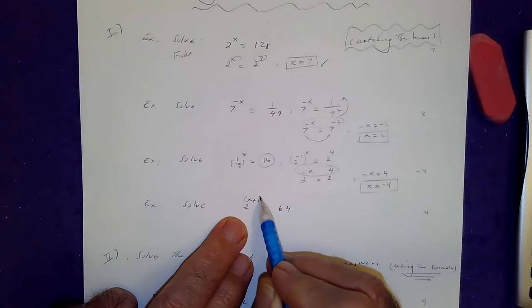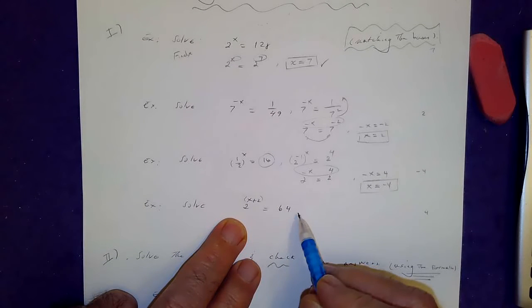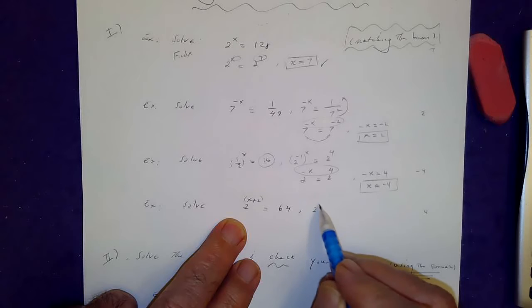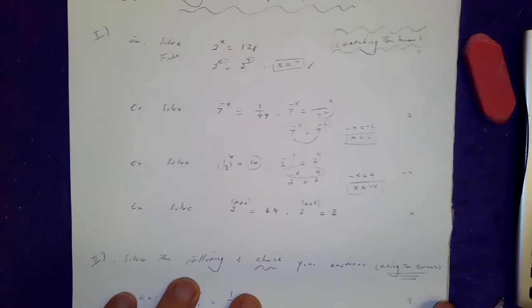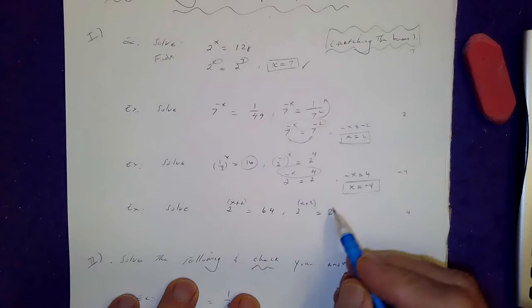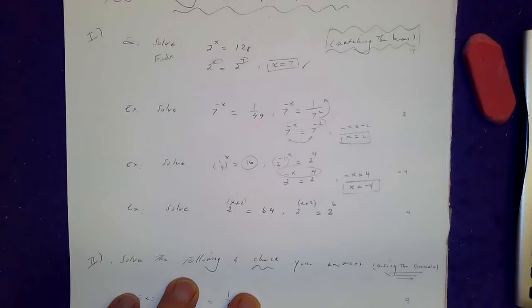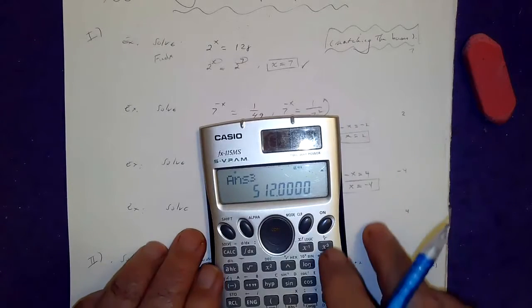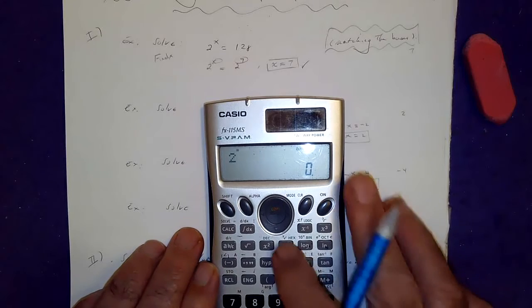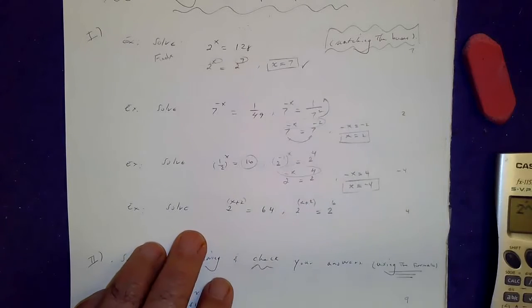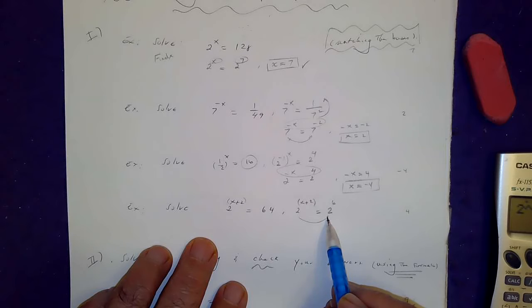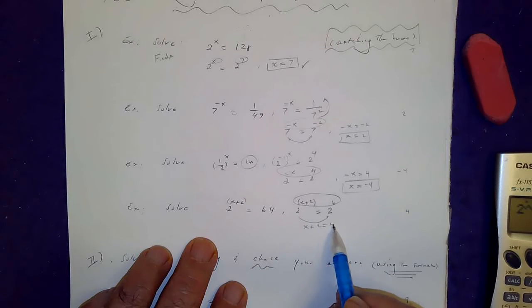Next: 2 to the power of x plus 2 is equal to 64. This is 2 to the power of x plus 2, and 64 is 2 to the power of 6, since 2 to the 6 is 64. Match the bases, set the powers equal: x plus 2 equals 6, so x is equal to 4.